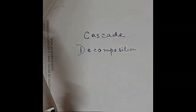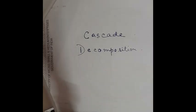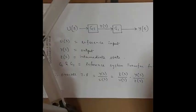Dear students, today we will discuss cascade decomposition. First, we have to know what decomposition is — it is a tool or process by which we can easily solve the mathematical equation of a system or plant. Decomposition technique is basically of two types: one is cascade decomposition and another is parallel decomposition. So let's start with cascade decomposition.